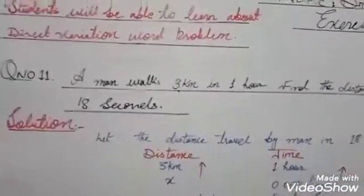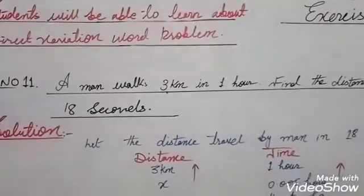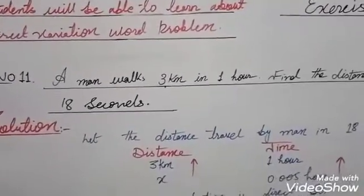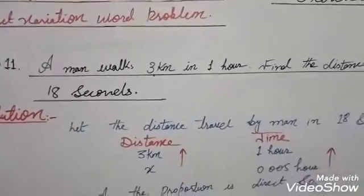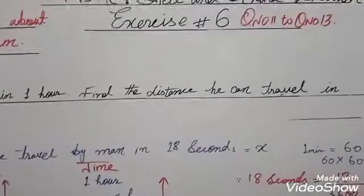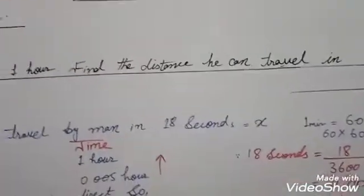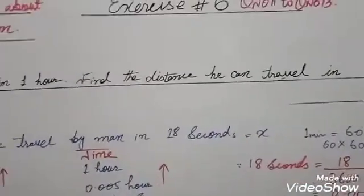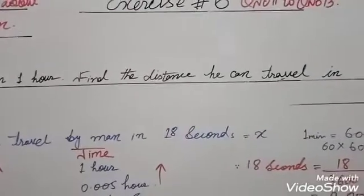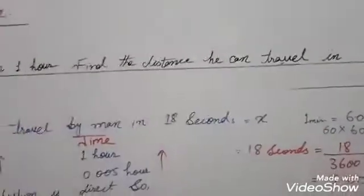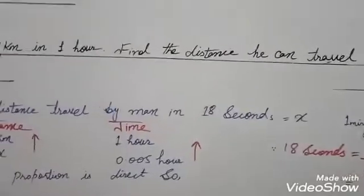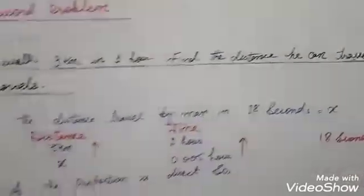A man covers a distance of 3 km in one hour. We have to find the distance he can travel in 18 seconds — so in 18 seconds, we need to find the distance.